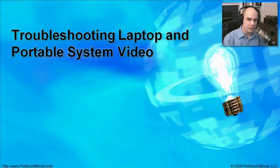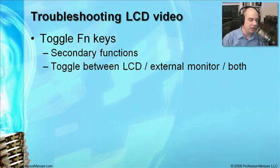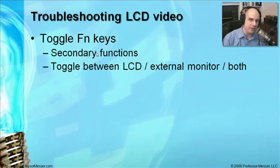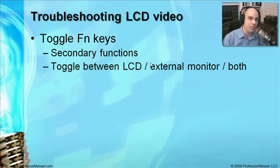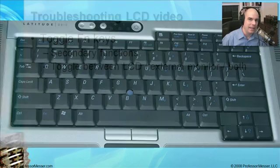When dealing with a portable system, there's usually some type of video output, and troubleshooting it is a bit different than on a desktop. The first thing to know is that the LCD screen is not always on — you have the option to toggle it or to send video output through the external video port on your laptop. This is done through function keys, or FN keys, which allow secondary functions. Because laptops are so small, some keys do double and triple duty.